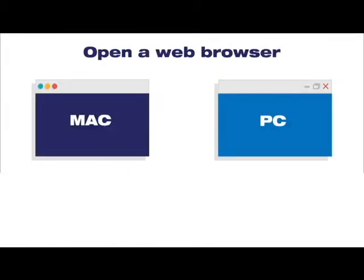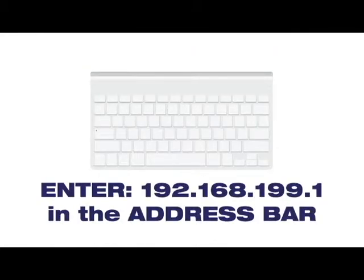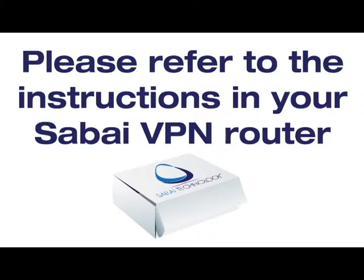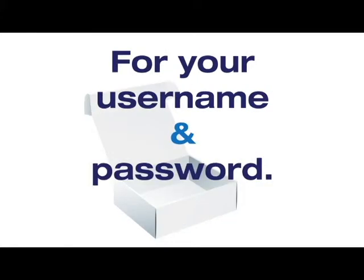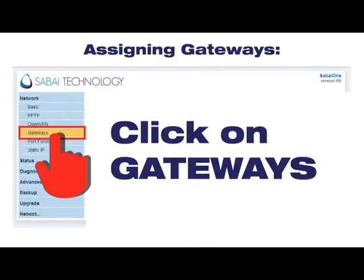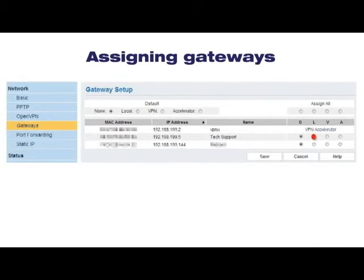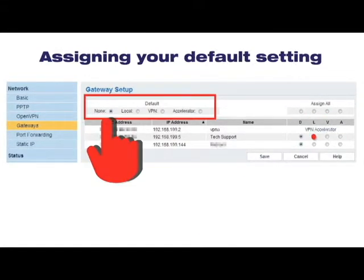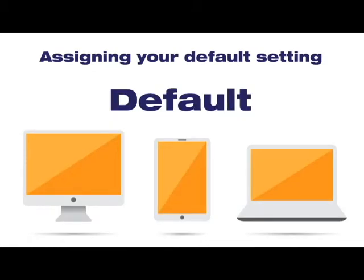Now, let's assign your gateways. Open a web browser and enter 192.168.199.1 in the address bar. Please refer to the instructions in your Sabai VPN router box for your username and password. Click on Gateways in the menu bar to the left under Network. There you will see all of your devices currently connected to the router. Start by assigning your default setting.